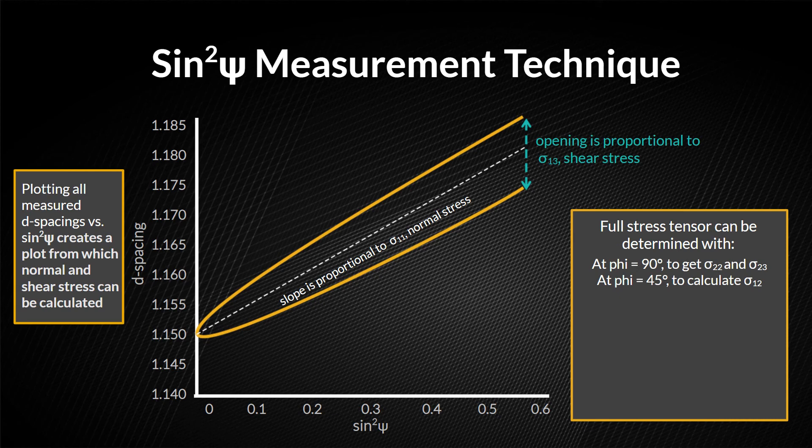Then, we can measure at 45 degrees to the original measurement to calculate the shear stress sigma12. The third normal stress sigma33 is equal to zero since the measurement is at the surface.